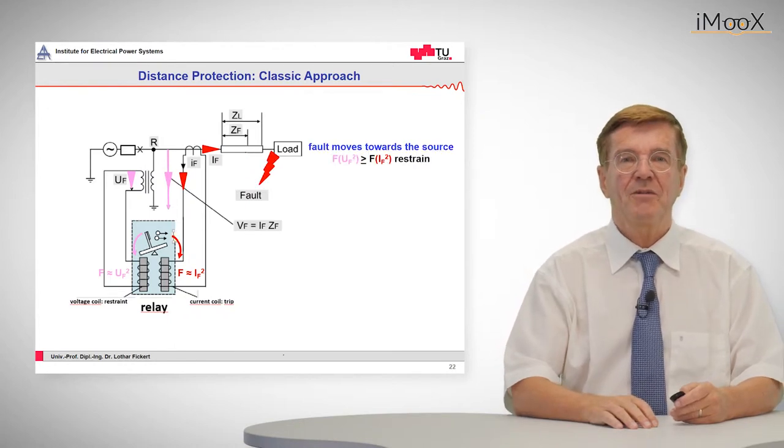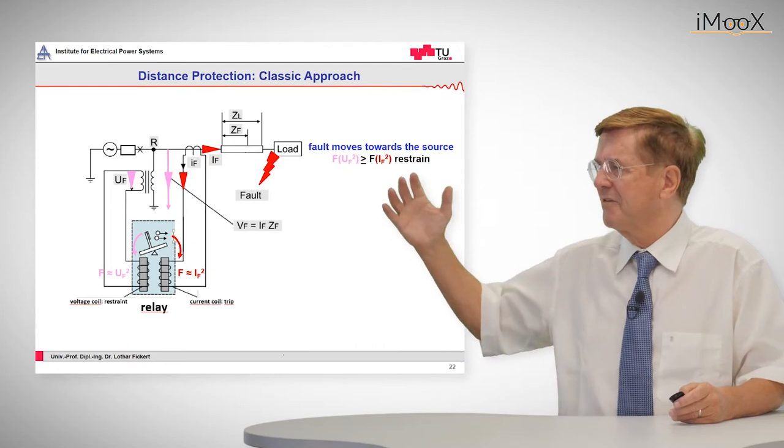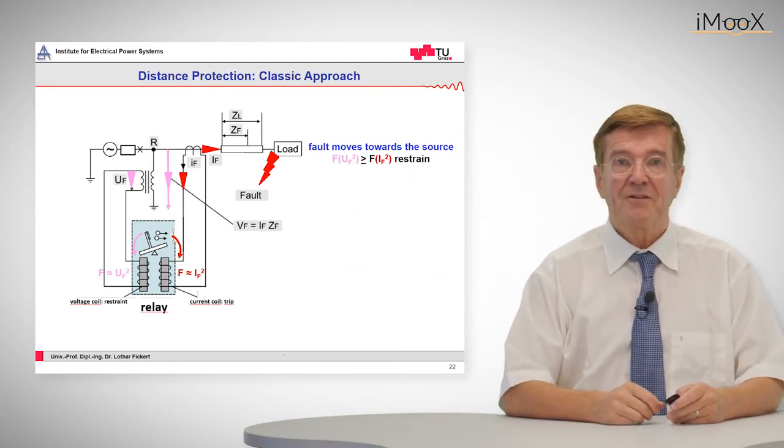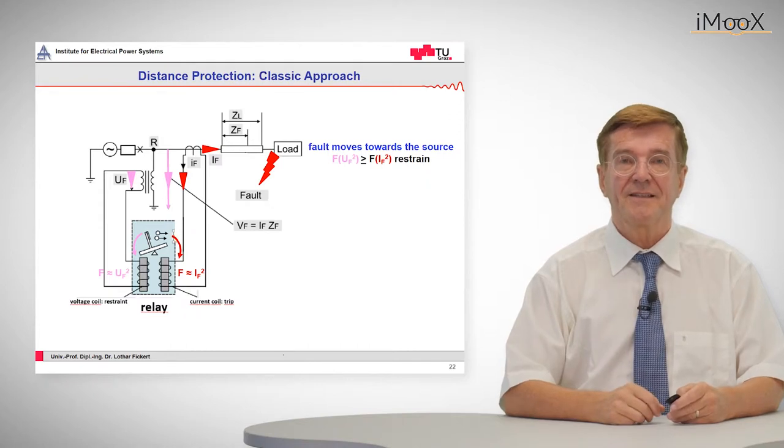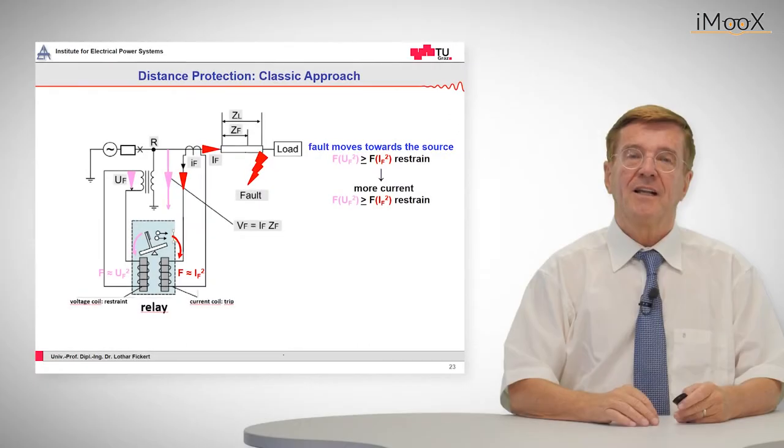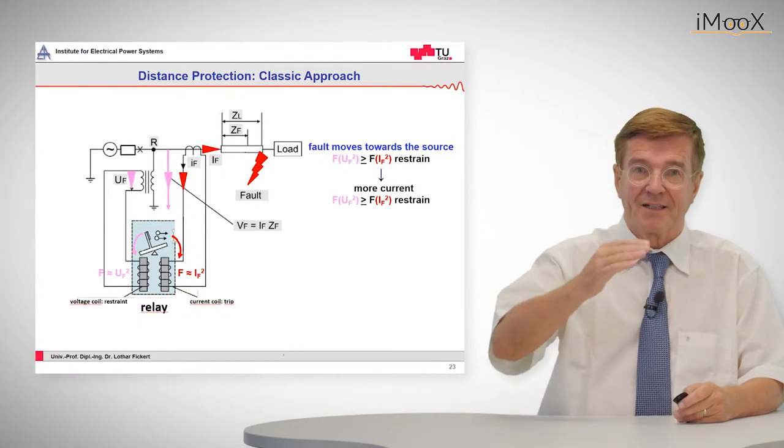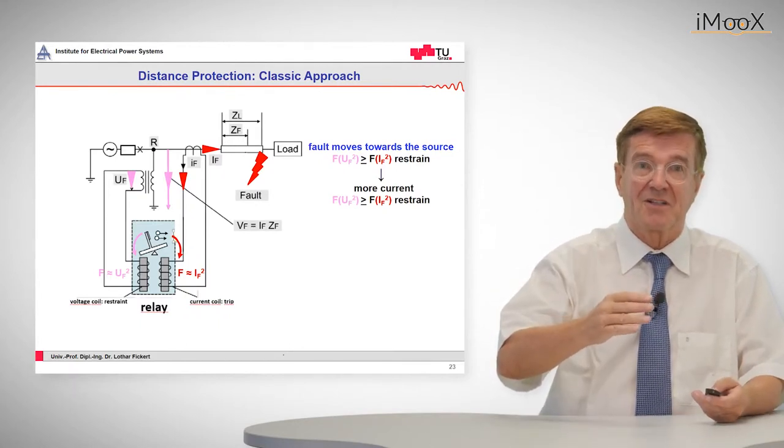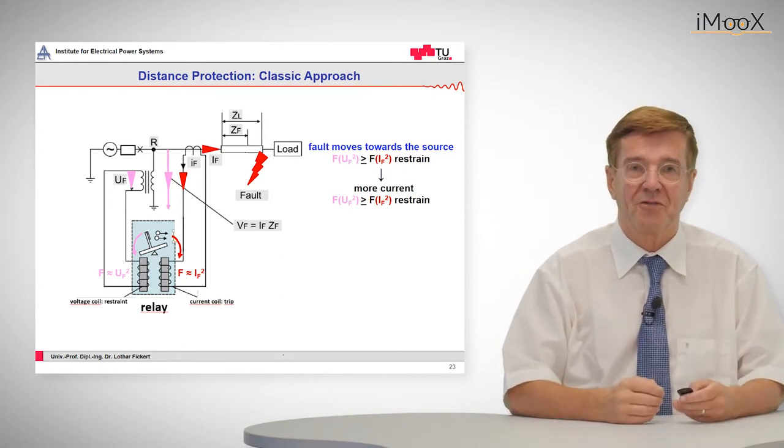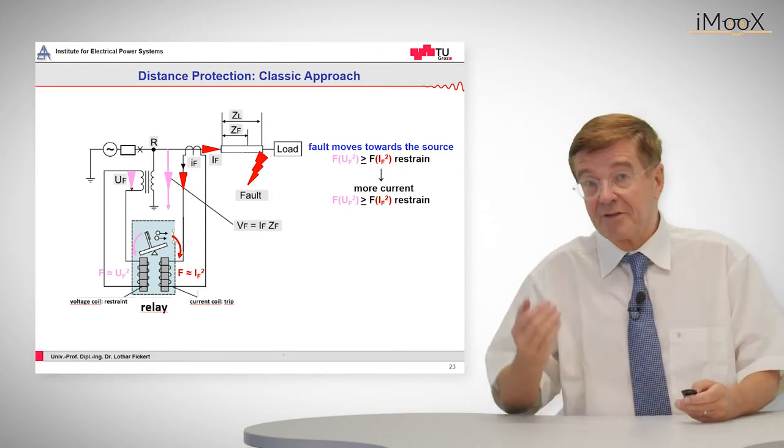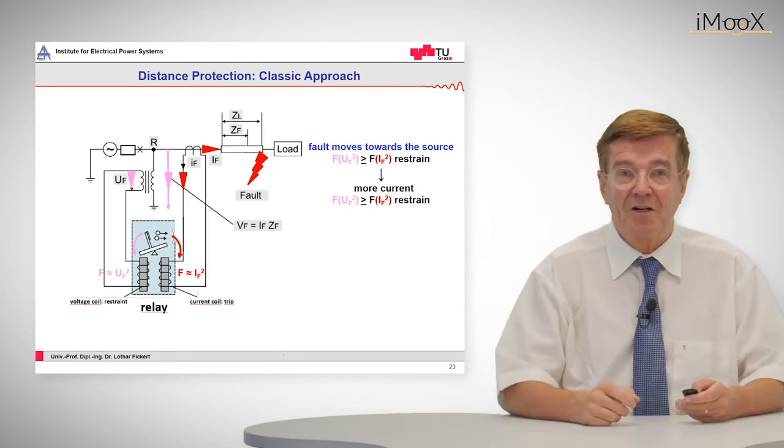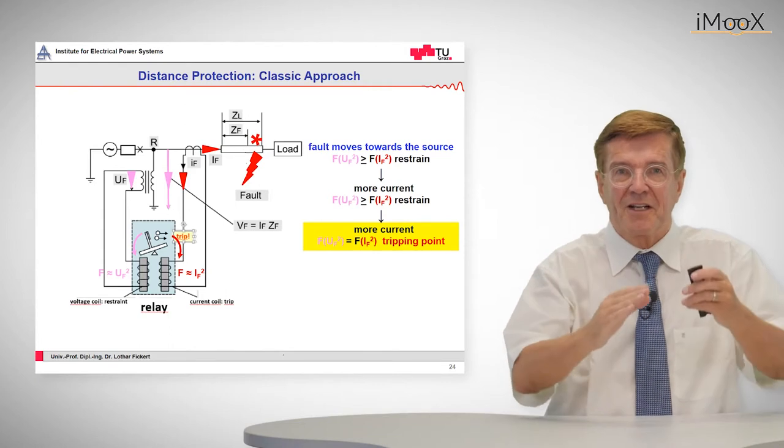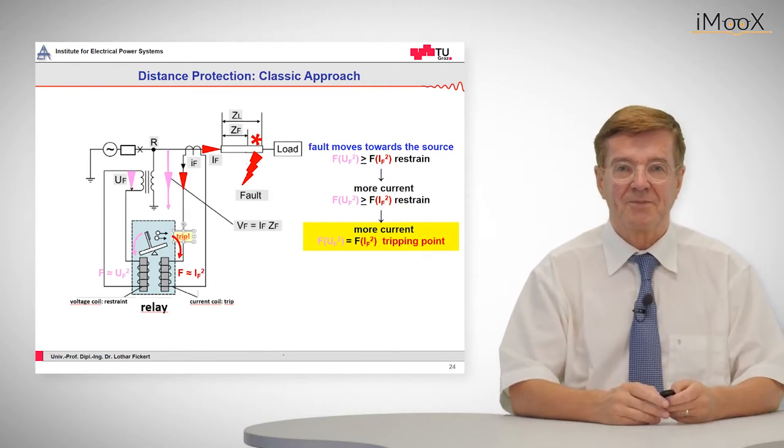Now if we have a fault or a high impedance at the far end or behind this line the restrained forces are higher than the trip forces, the current forces. If we move further in one side comes down which is the restraint force, the voltage source, because the closer we get to the relay the less residual voltage is monitored there. And on the other hand the current will go up and that goes on till we at a certain point have an equilibrium and behind this we have a trip zone.